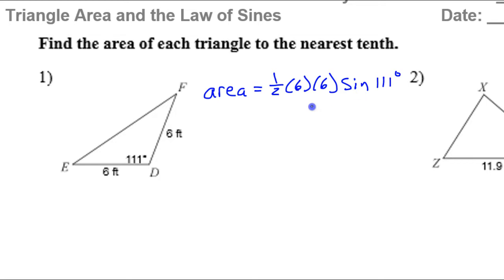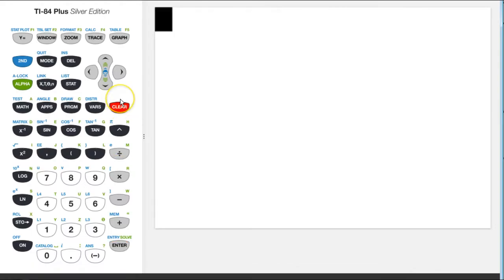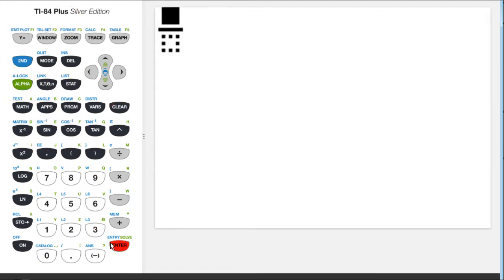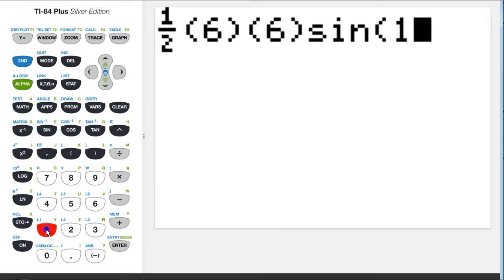Make sure your calculator is in degree mode. To make a fraction on this TI-84, I can hit alpha and Y equals and hit enter. So I'm doing one-half, and then I had six times six times the sine of 111.